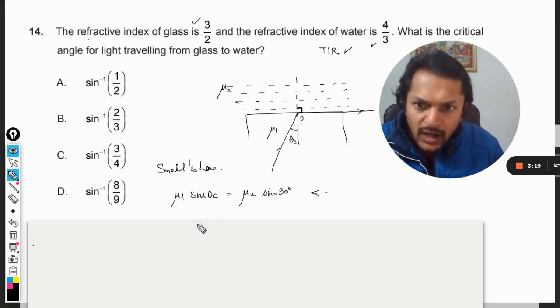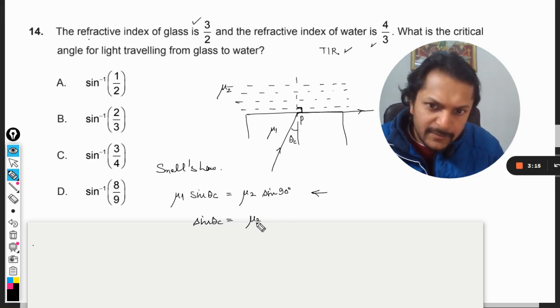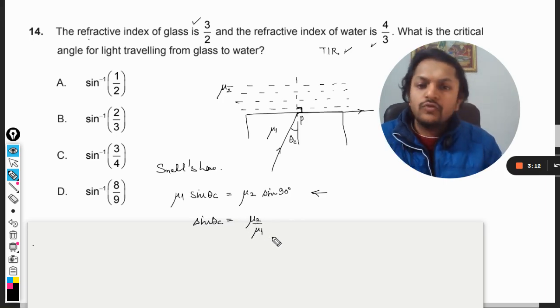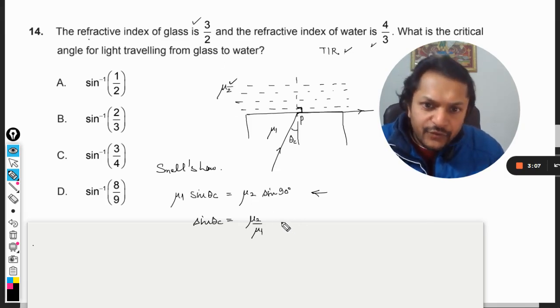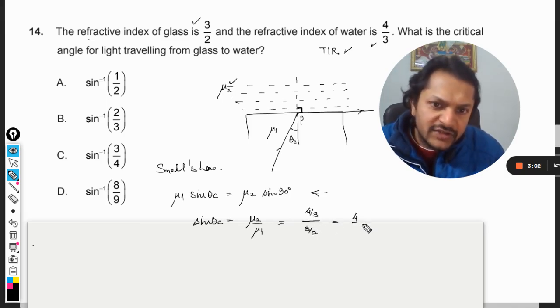So sine 90 is 1, so sine of theta critical is mu 2 divided by mu 1. So mu 2 will be for water that is 4 by 3. I am just substituting the values here: 4 by 3 divided by 3 by 2, so it is 4 by 3 multiplied by 2 by 3, so it comes out to be 8 by 9.